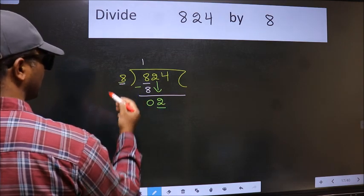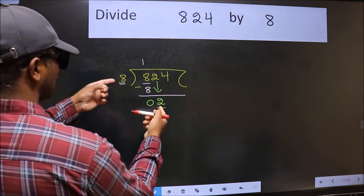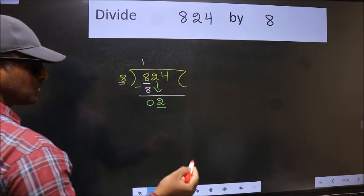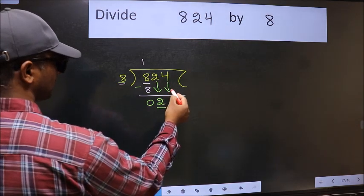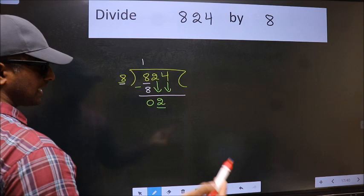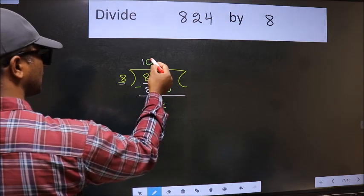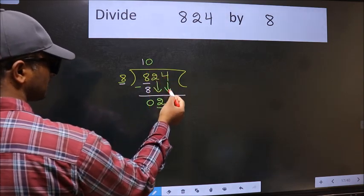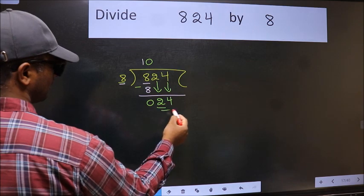2 is smaller than 8, so we should bring down the second number. And the rule to bring down the second number is we should put 0 here, then only we can bring this number down. Now 24.